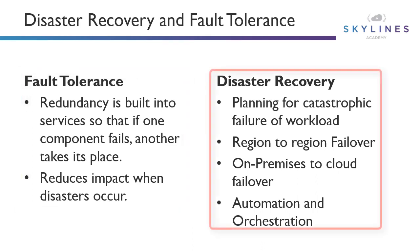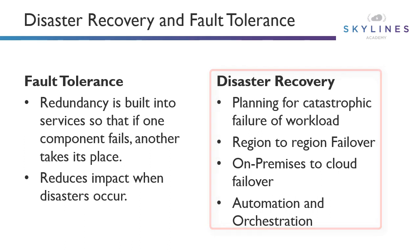Disaster recovery, in contrast, shouldn't be confused with high availability. This is more about planning for a catastrophic failure of a workload — maybe an entire region goes out, or you've got on-premises to cloud failover where you have a whole disaster on-premises and you need to recover that in the cloud. Disaster recovery also includes a component of automation and orchestration to bring those workloads back online in a more automated fashion, helping to meet RTO and RPO objectives in the event of a complete disaster.